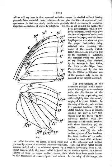Oophagy: feeding on eggs. Opisthognathous: with receding mouthparts, or having mouthparts that slope backward or face backward. Orbicular stigma: a marking placed between the reniform stigma and the thorax, usually circular in shape.